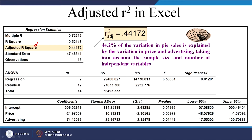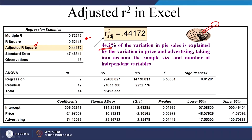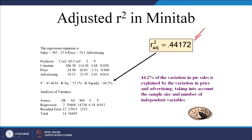For the previous class example on multiple regression, R-squared was 52.148% but adjusted R-squared was 44.2%. From now on, always look at adjusted R-squared rather than R-squared, as it gives a better picture of the model. We say that 44.2% of the variance in the data is explained by the independent variables — price and advertising expenditure. The MINITAB output shows both R-squared and adjusted R-squared, with adjusted R-squared always smaller.